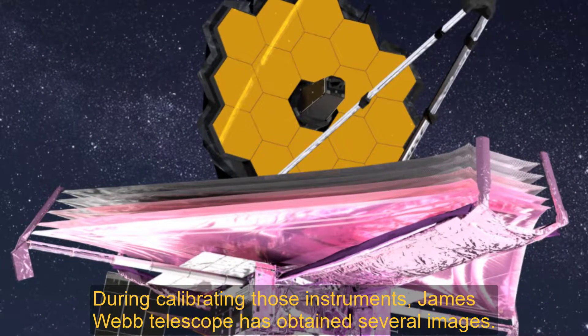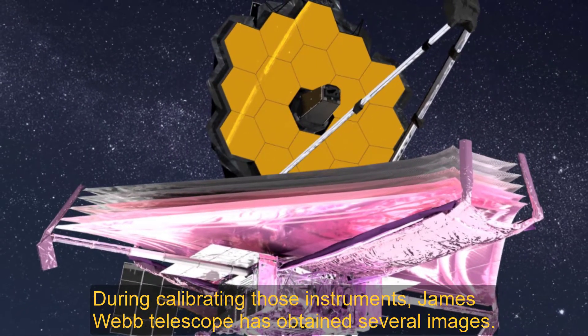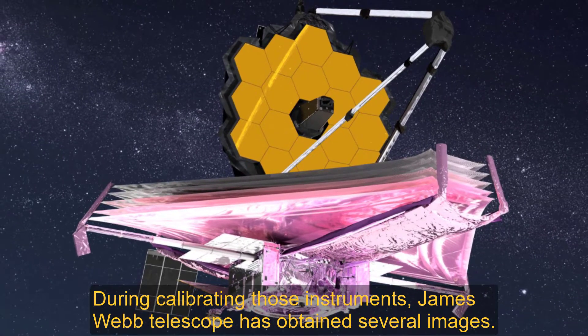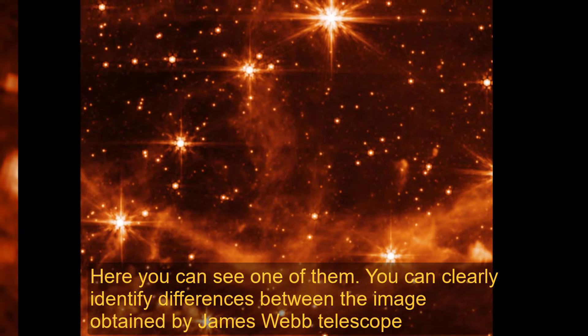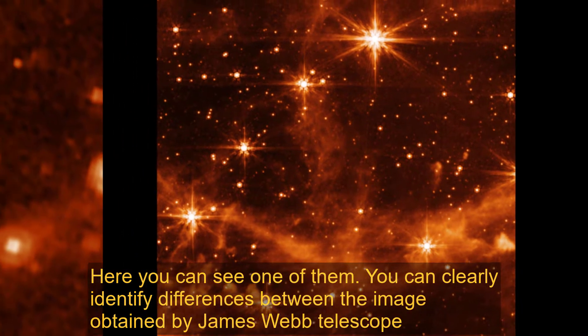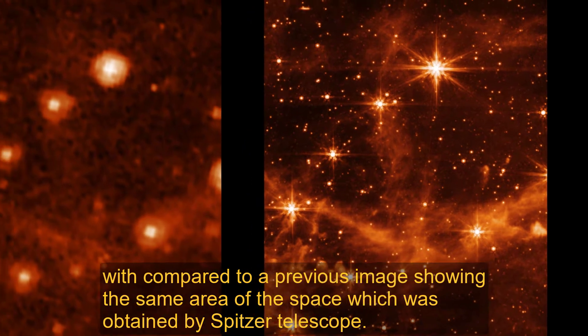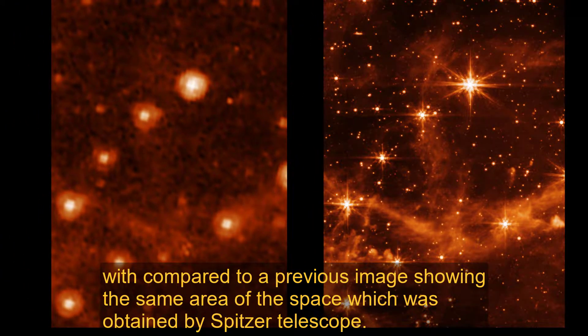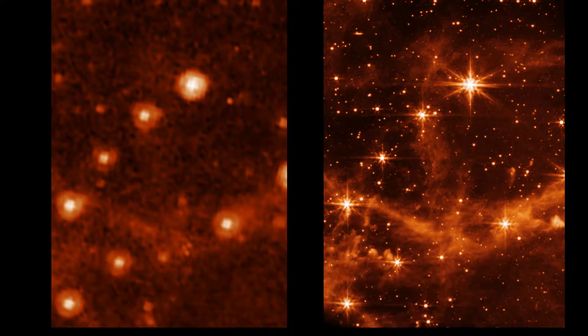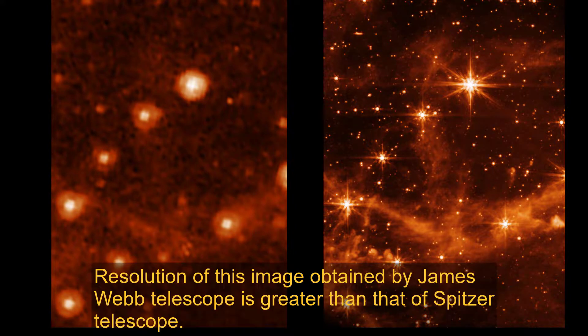During calibration, James Webb Telescope has obtained several images. Here you can see one of them. You can clearly identify differences between the image obtained by James Webb Telescope compared to a previous image showing the same area of space, which was obtained by Spitzer Telescope. The resolution of the James Webb image is greater than that of Spitzer Telescope.